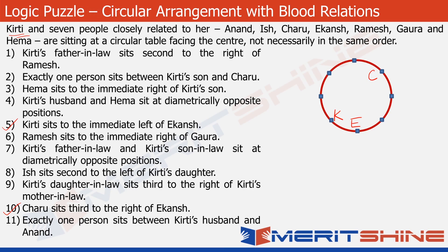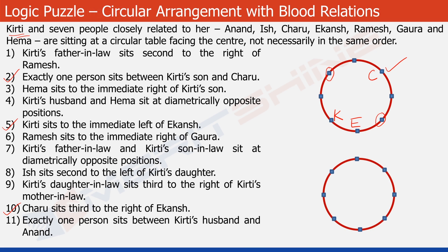The next statement to use is statement 2. It talks about Kirti's son and Charu — it says there is just one person between them. We already know where Charu is. If there is just one person between Kirti's son and Charu, there are two possible positions for Kirti's son. So we'll make two cases here — let's call the first one Case 1 and the second one Case 2.